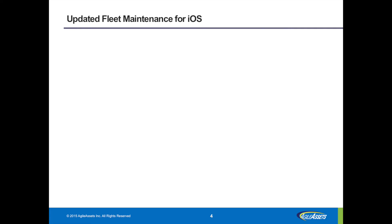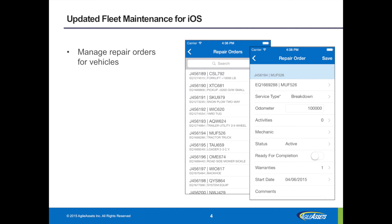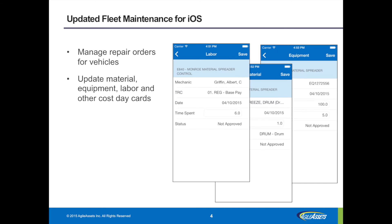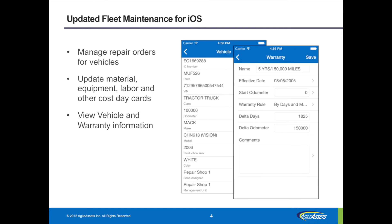The Fleet Maintenance app also has quite a bit of functionality. You're able to manage repair orders for vehicles and search and find them. I can update material, equipment, labor, and other cost day cards from anywhere — what did I use, how long did it take, who did the work — all captured from the mobile device. I can also view vehicle and warranty information, and those will show up right inside the mobile app.